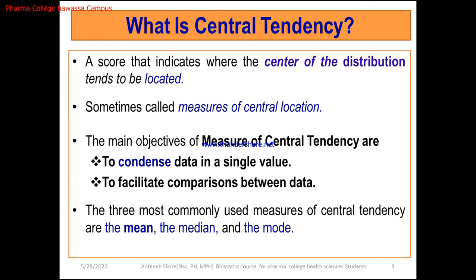These values help us identify the center of the data distribution. That distribution could be normally distributed, in which case mean, median, and mode are equal. Or it could be negatively or positively skewed, because most of the time the mean can be affected by extreme values. In such cases we use the median. These measures are also sometimes called the measure of central distribution. Their main objective is to summarize data at a single value — the mean, median, or mode.